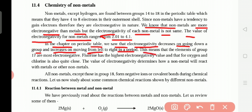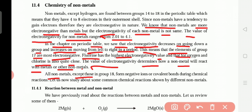This means that the elements of group 17 are most electronegative. Fluorine has the highest electronegativity value, and that for oxygen and chlorine are also quite close. The value of electronegativity determines how a non-metal will react with metals or other non-metals. All non-metals except those in group 18 form negative ions or covalent bonds during chemical reactions. Let us now study about some common chemical reactions shown by different non-metals.